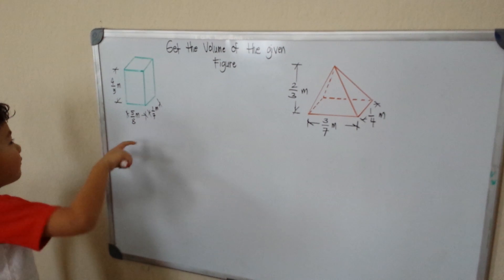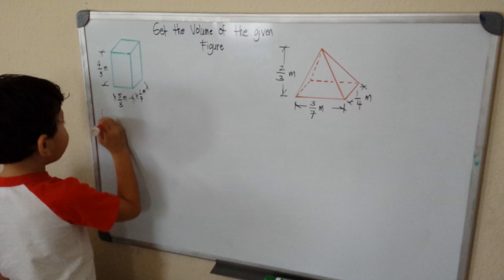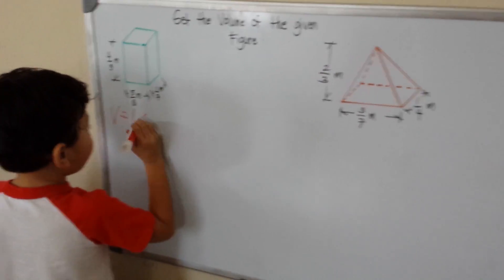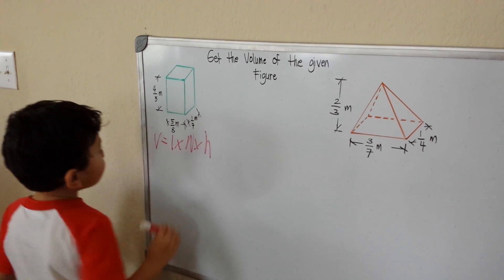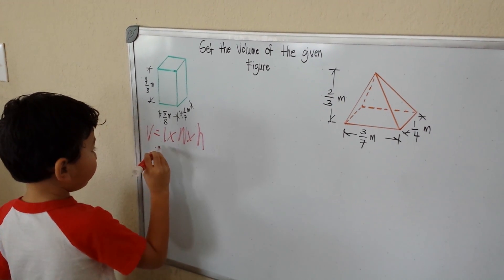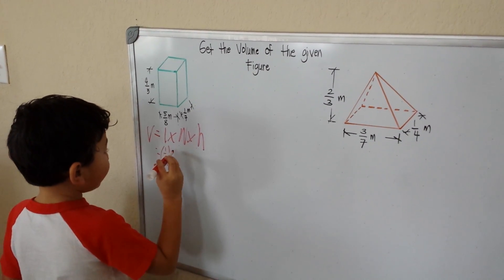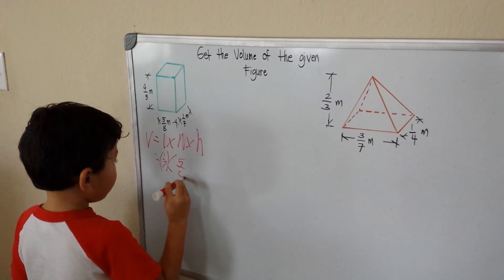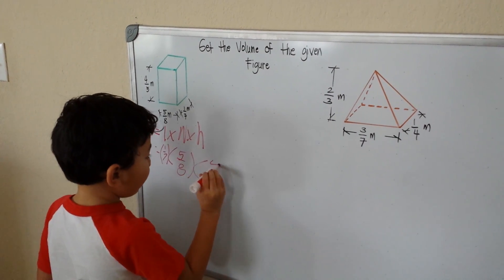Here is the prism. So we have the volume equals length times length times height. We have 1/7 is our length, 5/8, 5/8 which is the width, times 4/5.